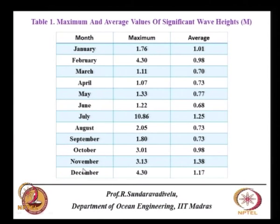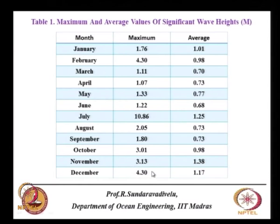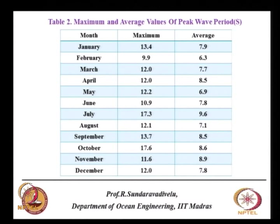Each month shows what the significant wave height will be. At Kattalur in July, we have about 10.86 meters maximum wave height, and similar values in February and November-December. Generally Kattalur is affected by north east monsoon between October to December, and waves of 9 meters have been recorded. The peak period — at which the maximum concentration of energy occurs — varies from 6 to 18 seconds.